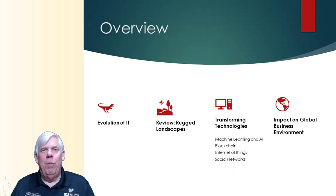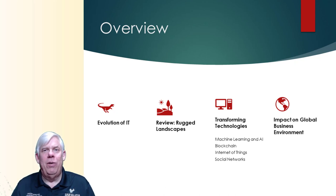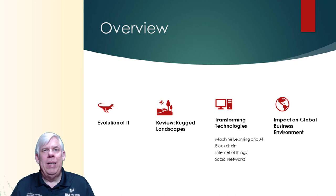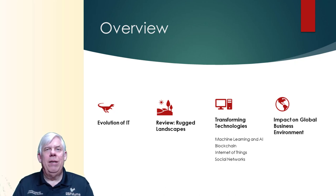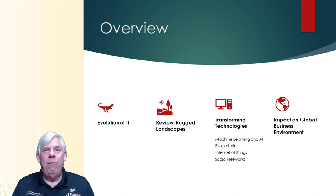This presentation will be in four parts. We'll begin by looking at how IT and technological capability has evolved over time. Then we'll do a quick review of rugged landscapes, something we talked about in the first of the lecture series. We'll then consider some specific transforming technologies, namely artificial intelligence and machine learning, blockchain, the internet of things, and social networks and how they may impact the environment. Finally, we'll take a look at the overall impact of information technology on the global environment.